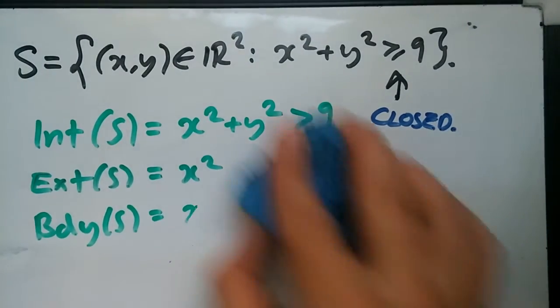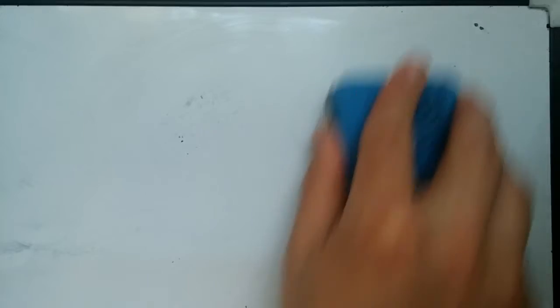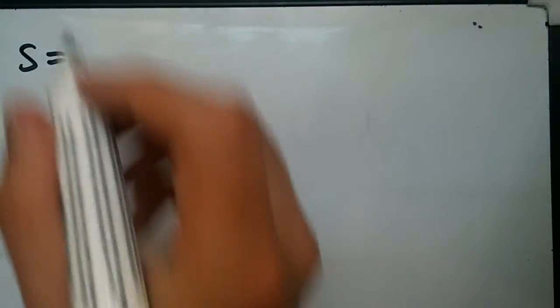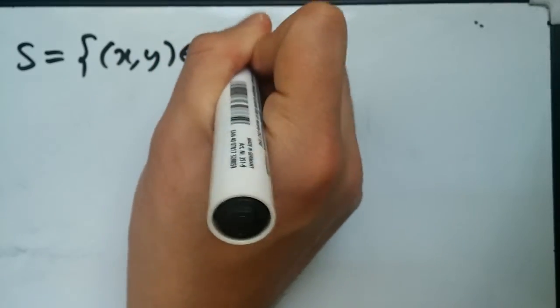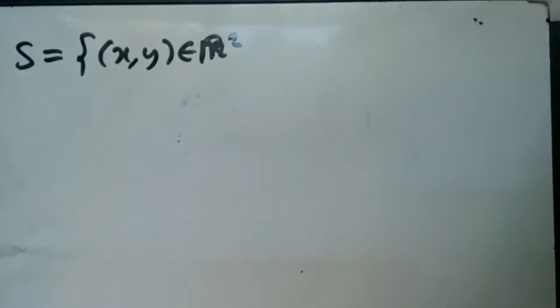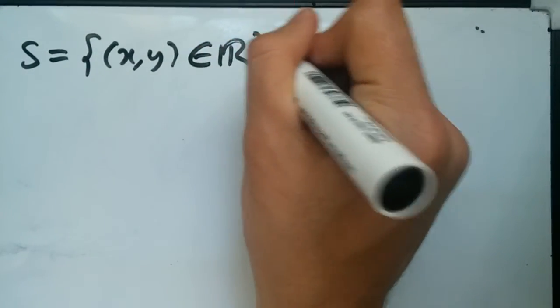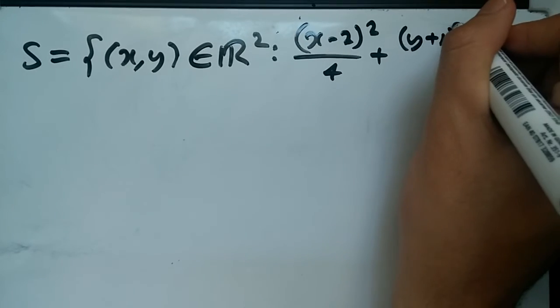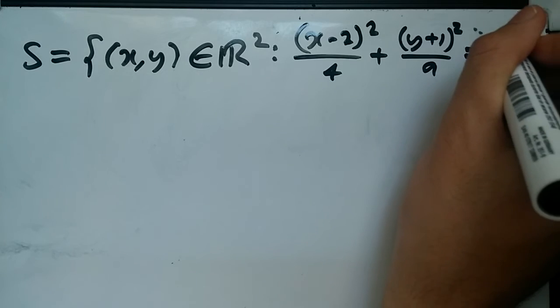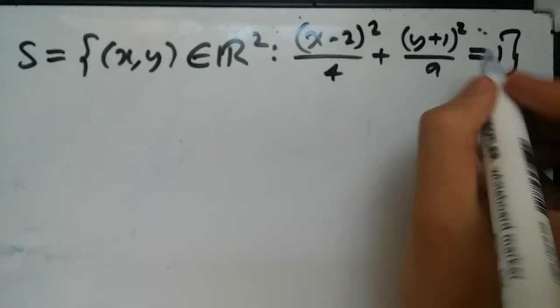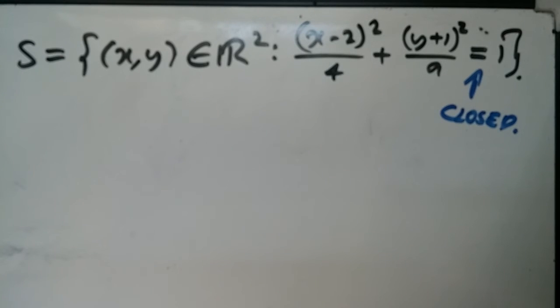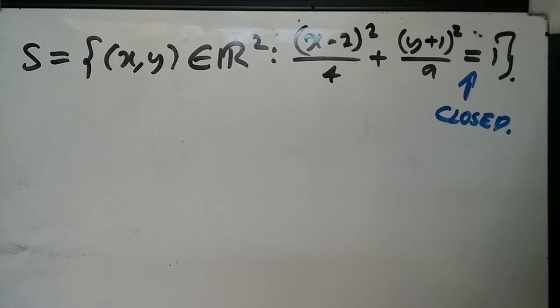Let's try one last example now. Again, one final example. I think we definitely got the hang of this thing now. So suppose finally that we have a subset S and it equals, once again, 2D space. S equals R squared. Now we have this kind of expression: (x-2)²/4 + (y+1)²/9 = 1. Now we have an equal sign. So once again, this would mean it's closed. It's locked in. So let's jump straight into this now.